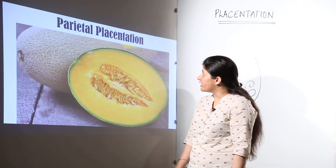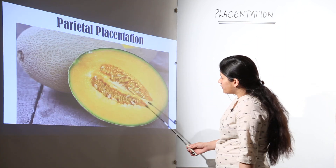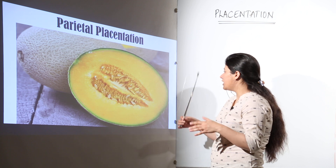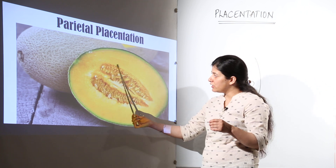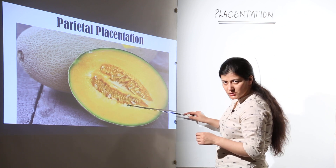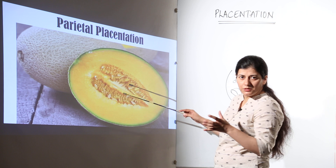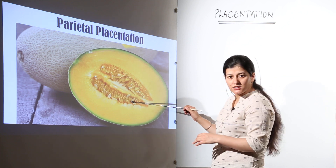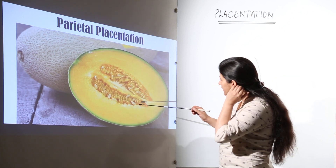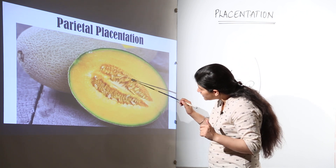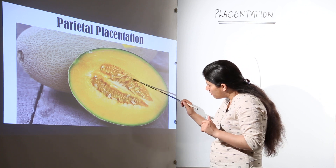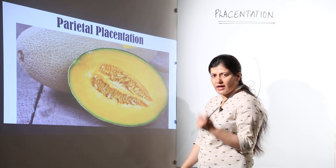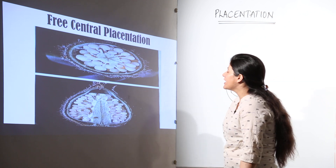This is parietal placentation. What you see here is a completely developed ovary with epicarp, mesocarp, and endocarp. The ovarian locule has a central hollow part with ovules joined towards the ends — as seen in papaya and cantaloupe. The ovules are attached to the ovarian wall by the placenta. Cucumber is also an example of parietal placentation.